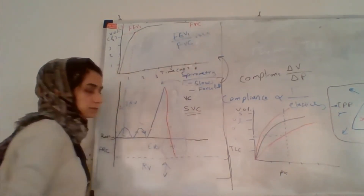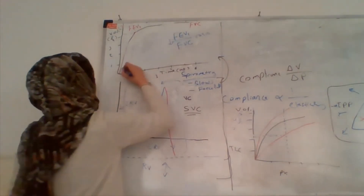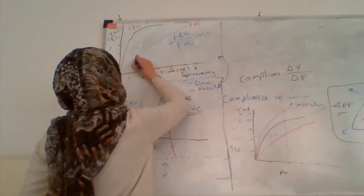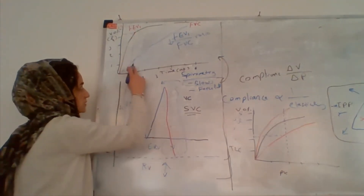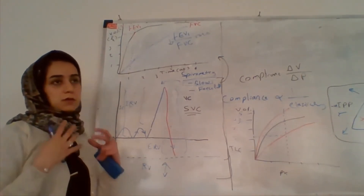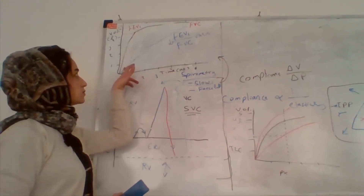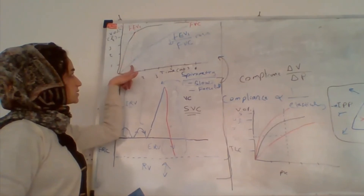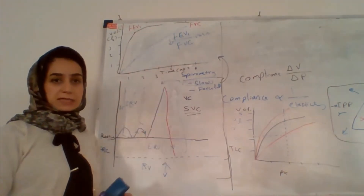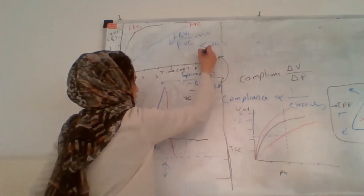The FEV1/FVC ratio is very important. If this ratio decreases, it means the person has obstructive lung disease. In obstructive lung disease, the person can eventually empty all the air from the lungs, but it takes more time due to resistance and obstruction. The volume expired in the first second — which normally should be about 80% of total — decreases to less than 70%. A ratio of less than 70% indicates obstructive lung disease.